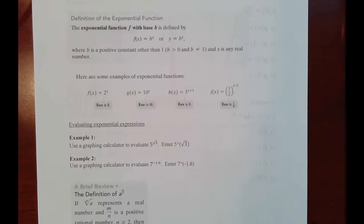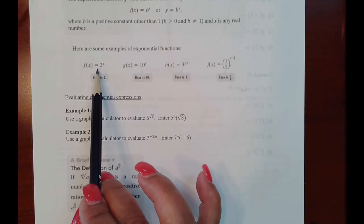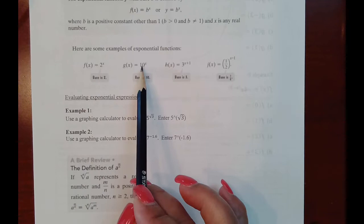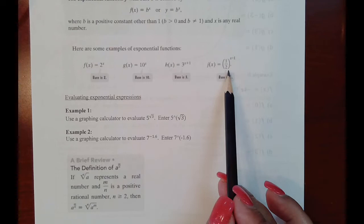We have examples of such functions: 2 to the x — notice this base is greater than zero, it's positive, and it's not equal to one. Likewise for all these bases. The variable just represents an exponent that can be any real number. So we have a base of 10, a base of 3, and a base of one-half.